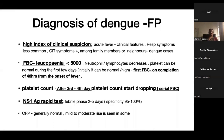The first full blood count is recommended on completion of 48 hours from the onset of fever. At that time, we will usually see leukopenia below 5,000. Platelets can be normal during the first few days, but after the 3rd or 4th day, they start dropping. We therefore advise serial full blood counts to diagnose dengue.